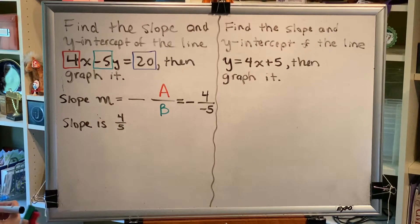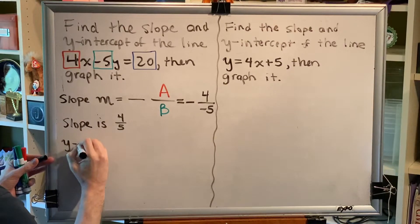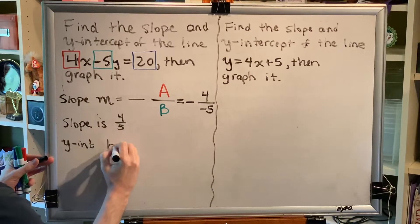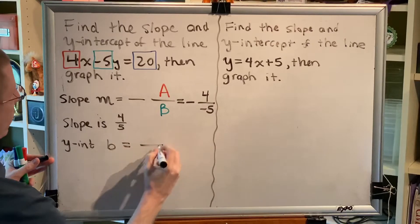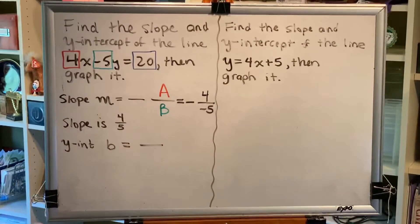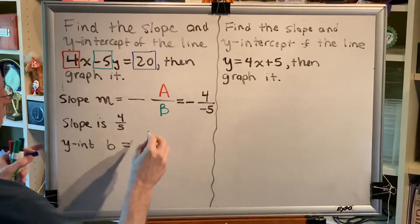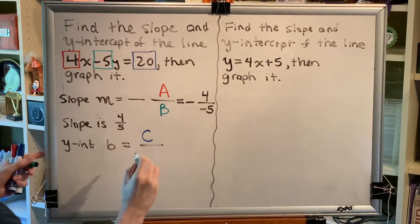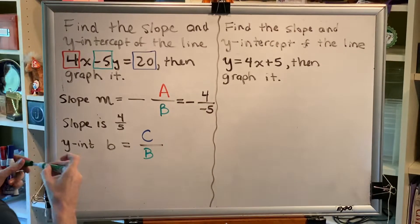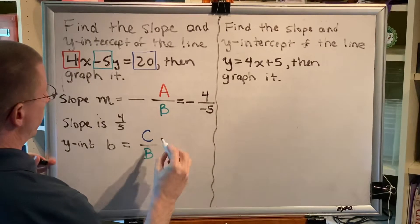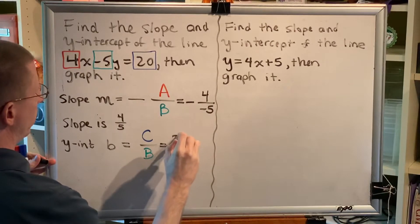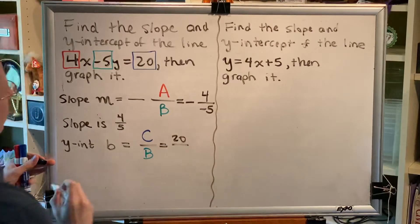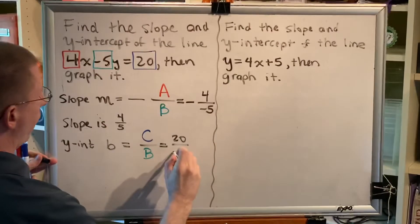Alright, now the y-intercept. The formula for y-intercept is c over b. And for our problem, c is equal to 20, and b is equal to negative 5.